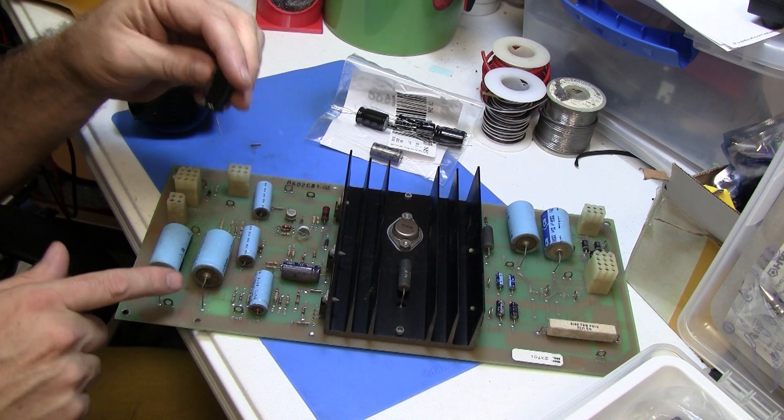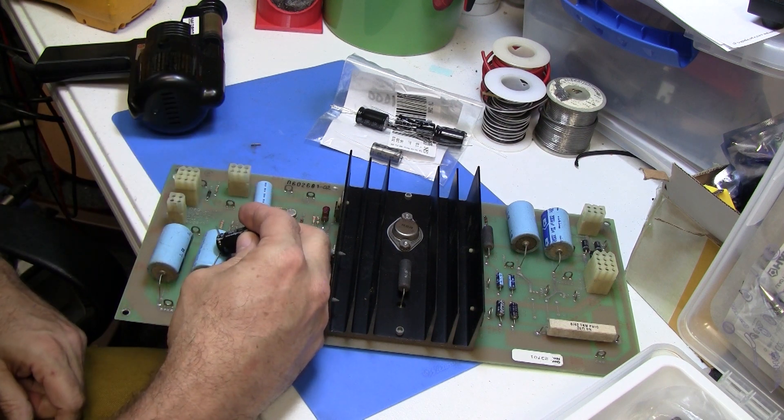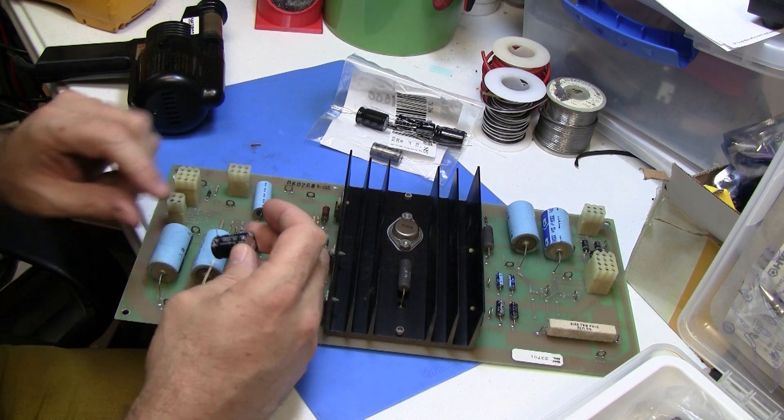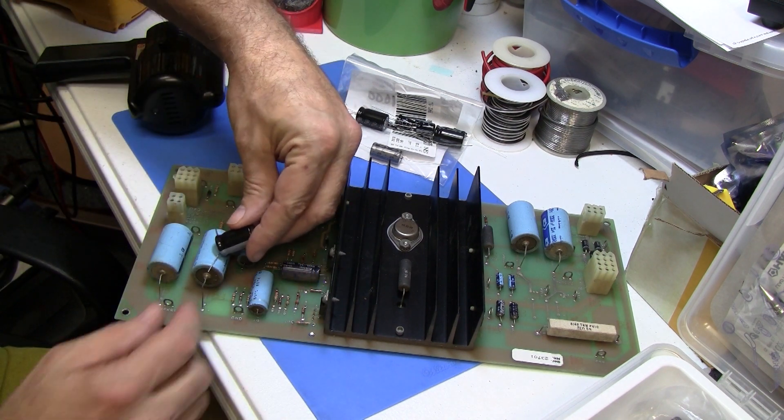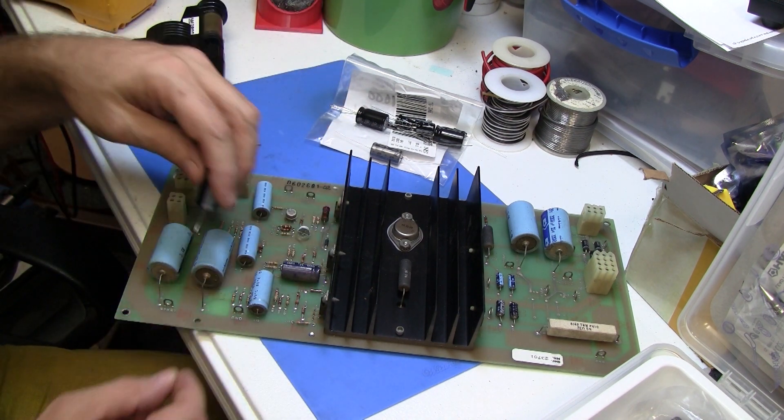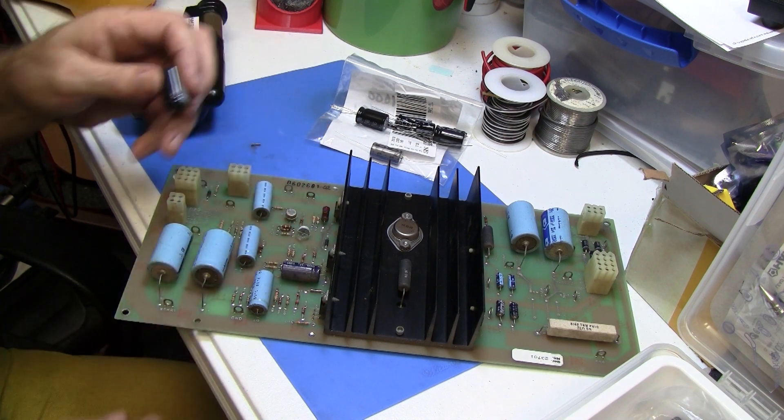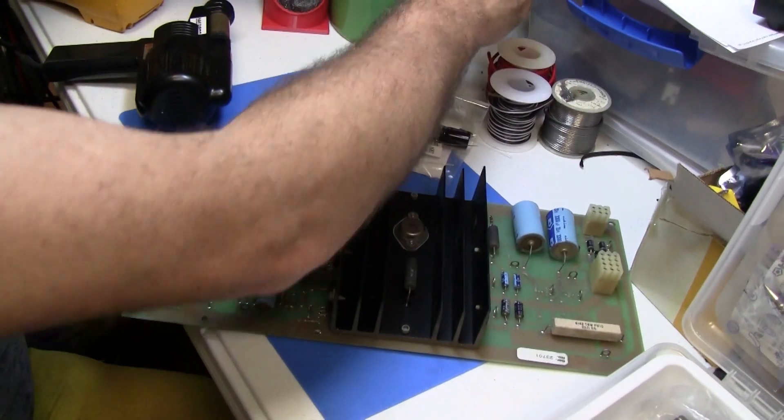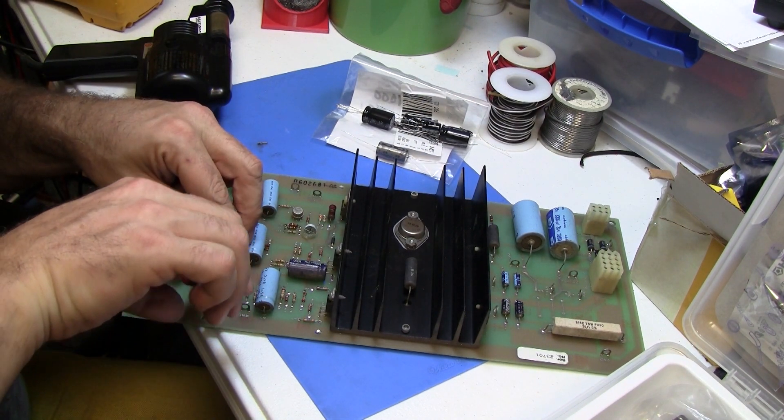I'm going to solder onto their existing leads, making sure that I get negative and positive set up right. And then I'll just kind of piggyback this onto the leads because in this case, there's not quite enough space for these leads to go into here. So that's another trick you can do.